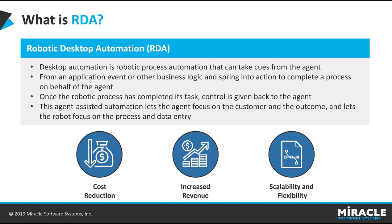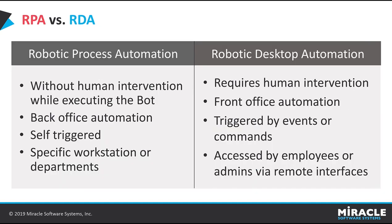Now we'll see what's the difference between RPA versus RDA. RPA is also called unattended automation — it is automation without human intervention while executing the robot. The robot is scheduled to run automatically, and if the application or system is logged off, the robot is capable of logging back into the system and running the automation task. This type of robot is self-triggered. Unattended automation is used for back-office systems.